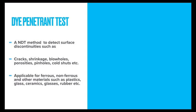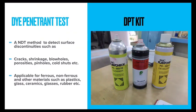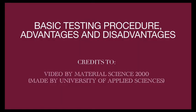We need to use a kit for the dye penetrant test — the DPT kit. It is a combination of three materials: the cleaner, the penetrant (the dye itself), and the developer. Now let's look into the basic testing procedure, advantages, and disadvantages of this method.